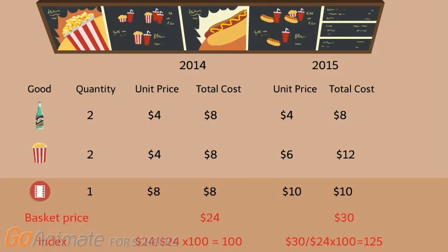The third column displays the unit prices of each good: popcorn is $4 per box, sodas are $4 each, and the movie ticket is $8. The fourth column shows how much you pay in total for each good — price multiplied by quantity. For example, in 2014, the price of popcorn was $4 per box, so you paid a total of $8 for two boxes. Adding all the goods together, we get the total price for the basket of goods, which in 2014 was $24.